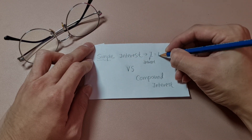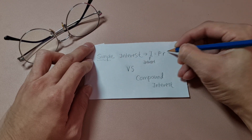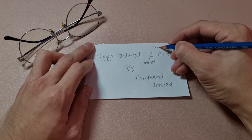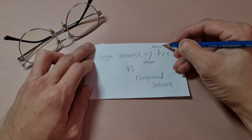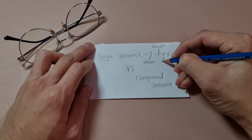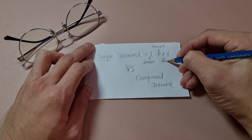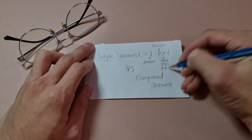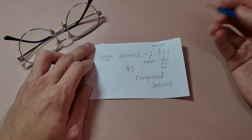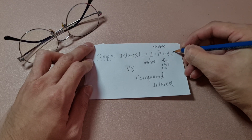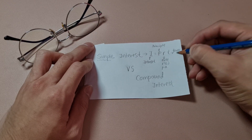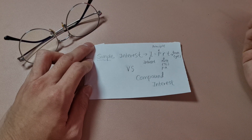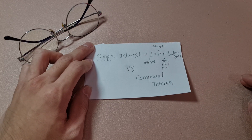And after that, I equals to P, R, T. P being the principal, R being the rate in percentage — but make sure it's P.A., per annum. And T means the term, how many years. So that would be the simple interest formula.